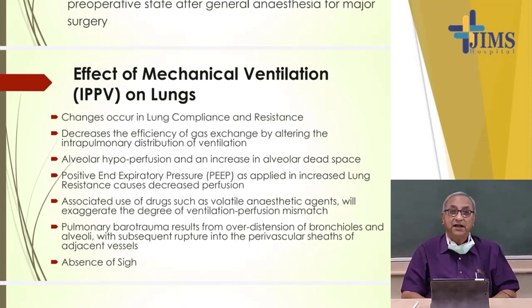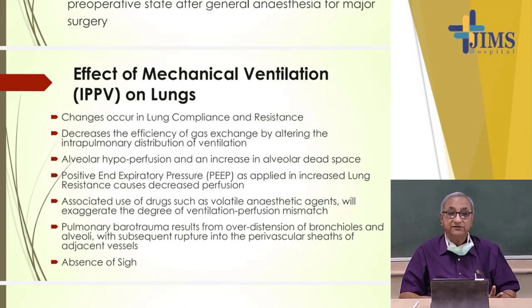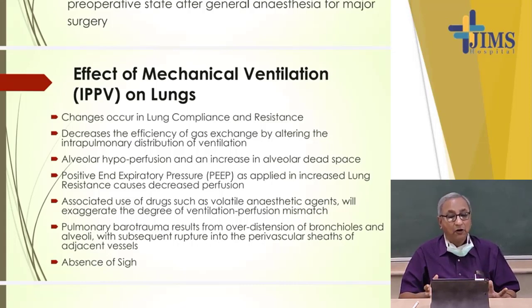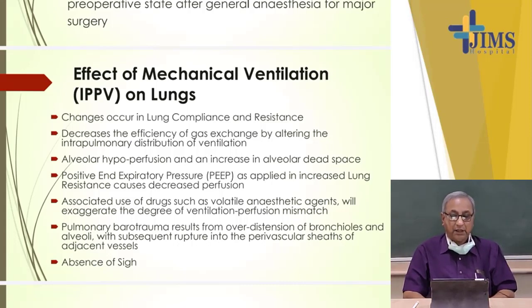Changes occur in lung compliance and resistance. Resistance occurs when the tracheobronchial tree is compromised and constricted, as in bronchial asthma. Compliance comprises the thoracic cage and the lungs themselves. High compliance means there is a compromise in the thoracic cage and/or the lungs, which decreases the efficiency of gas exchange by altering the intra-pulmonary distribution of ventilation.